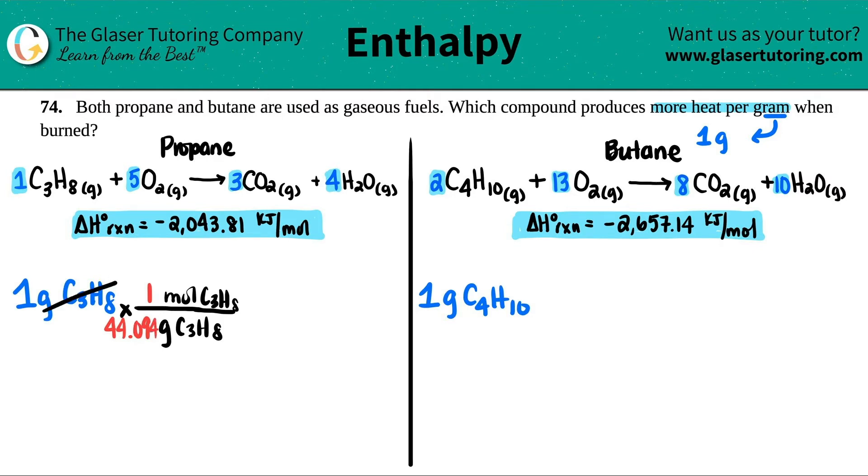Cross off grams because we don't want that. And now we're in moles, right? Moles of propane. So now I can use this ratio. Throw the moles of C3H8 on the bottom and the kilojoules goes up on the top. So if I just put that for every one mole of propane, right? There was negative 2,043.81 kilojoules. The negative just means that it's going to be released. Cancel this out.